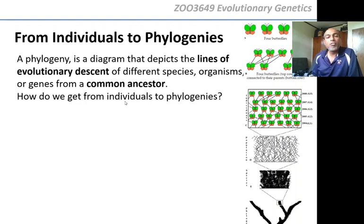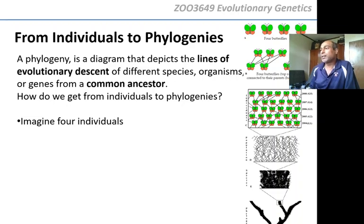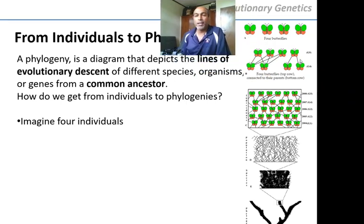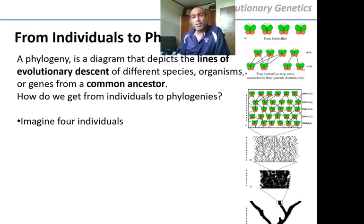So how do we get from individuals to phylogenies? We have these four butterflies here. So how are these four butterflies related in the grand scheme of things to the rest of their species and to other species? These four butterflies are related in the previous generation to their parents. So here are the four butterflies, and here are their parents. You can see that these two butterflies mated to give this one, and these two mated to give these three here. So these four butterflies are descended from their parents — that's the first step of tracking back the line of descent from an individual to its parents.